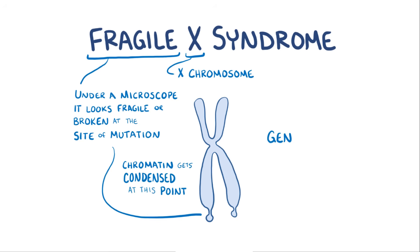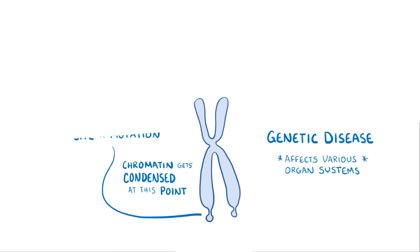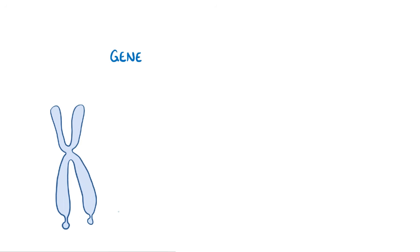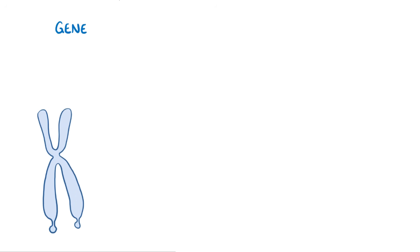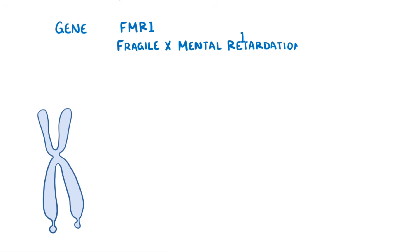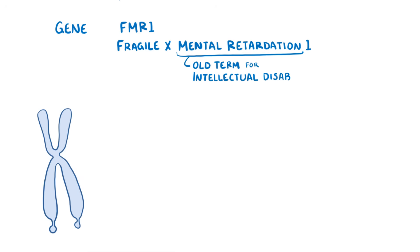Fragile X is a genetic disease that affects various organ systems. The gene for Fragile X is called FMR1, which stands for Fragile X Mental Retardation 1. Mental retardation is an old term for intellectual disability, which is one of the key features of Fragile X syndrome.